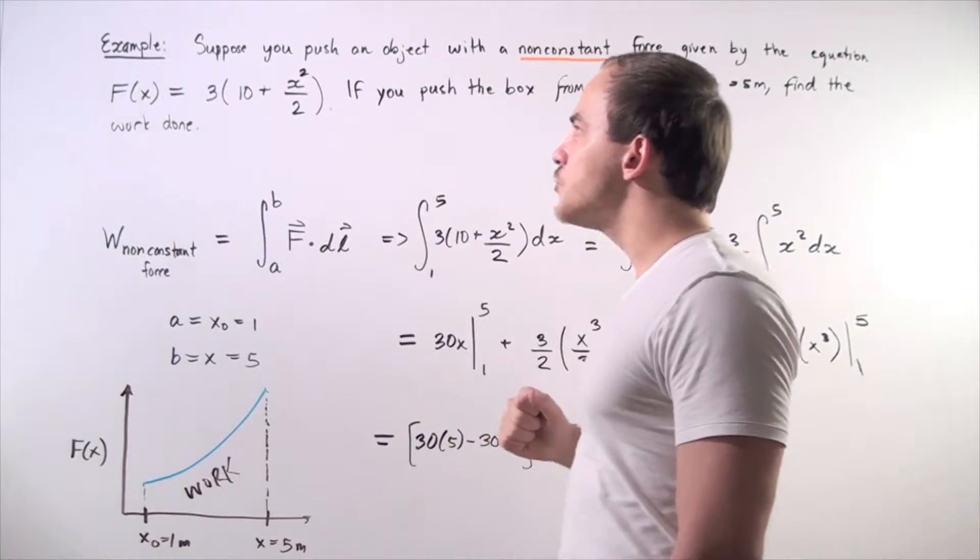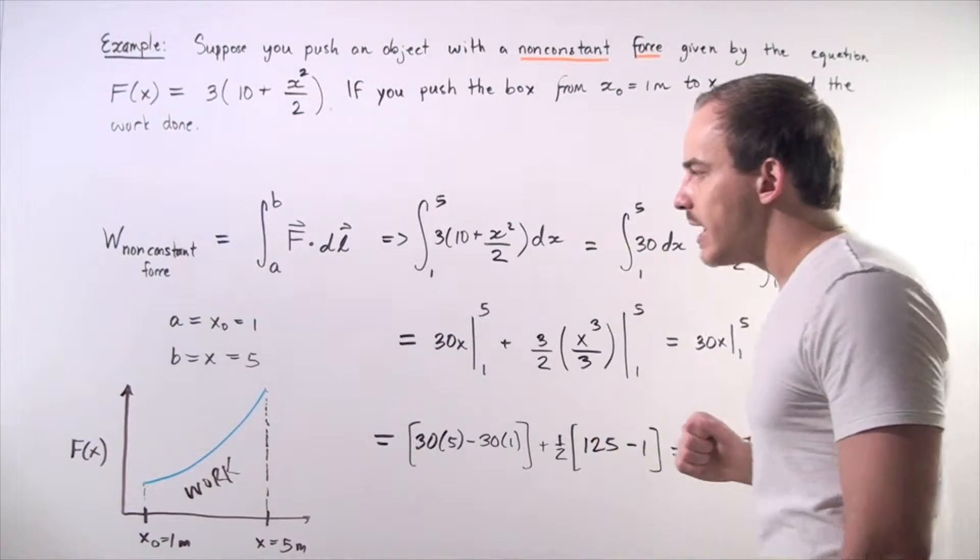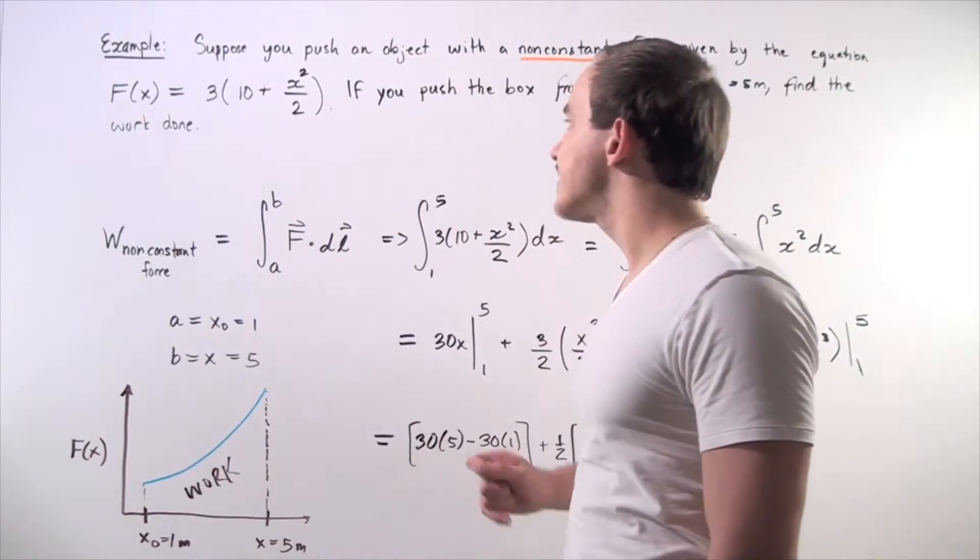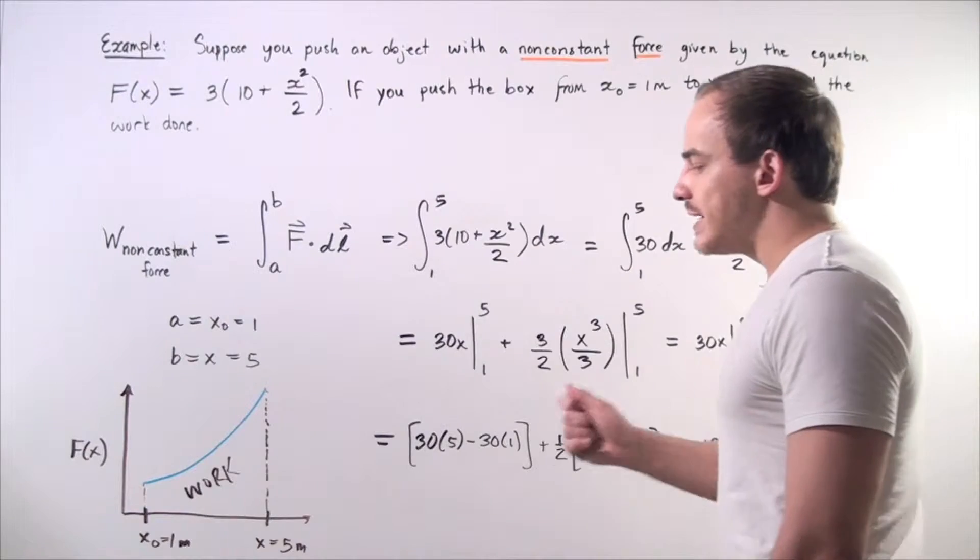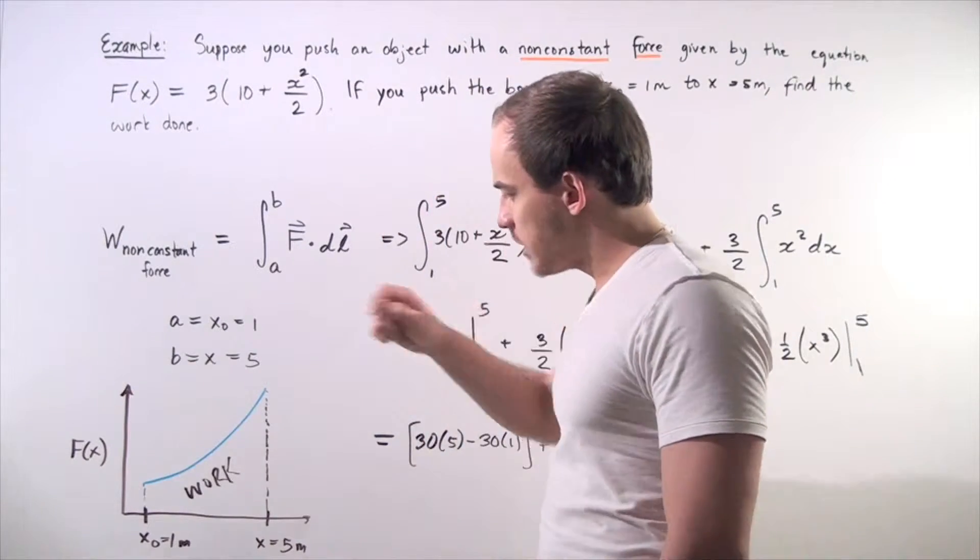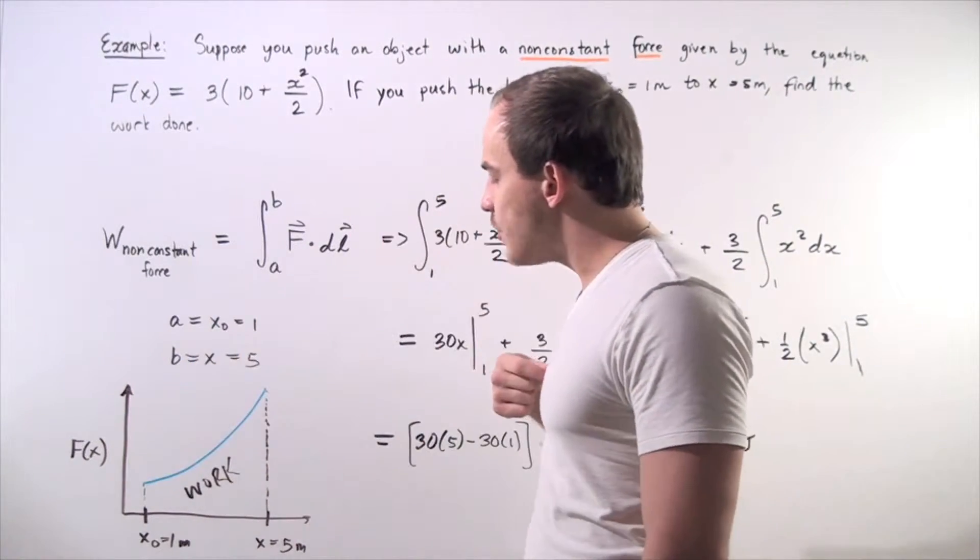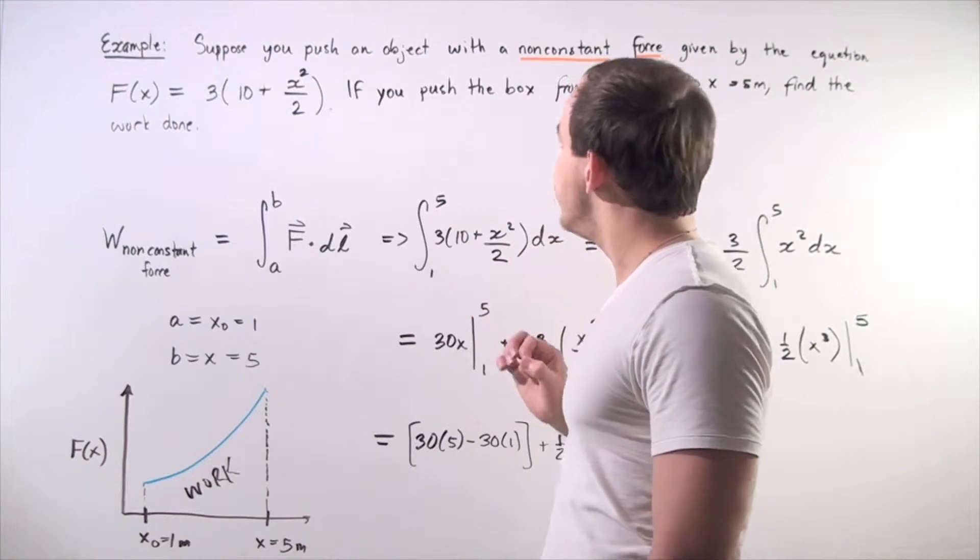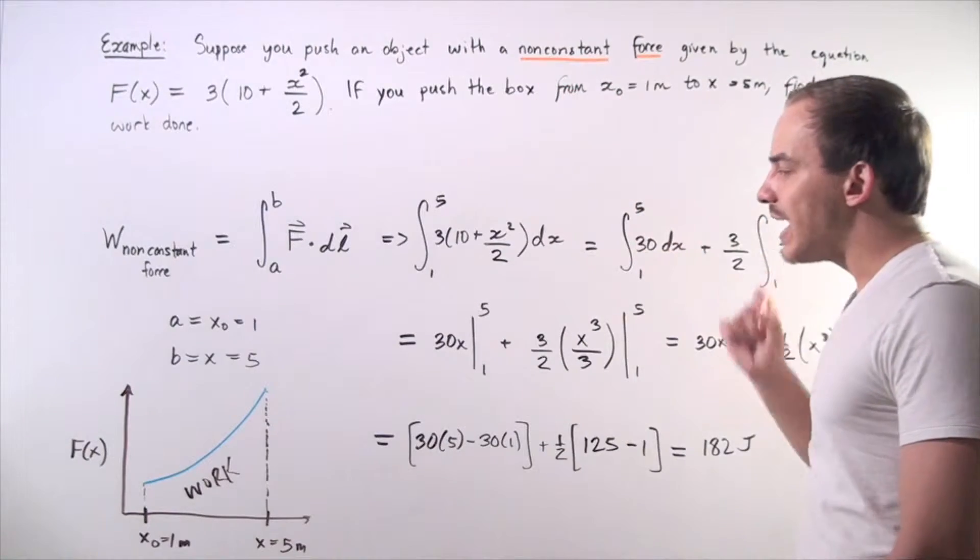We begin by plotting our function on the x-y plane. So, the y-axis is our force and the x-axis is our position given by x. So, our function looks something like this and notice that it's not constant and that means our force is non-constant.